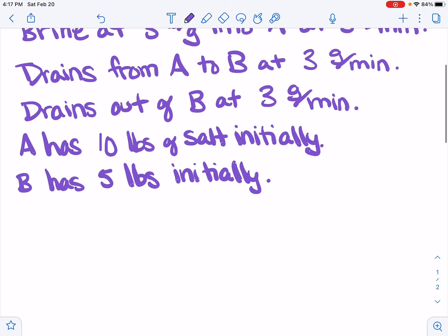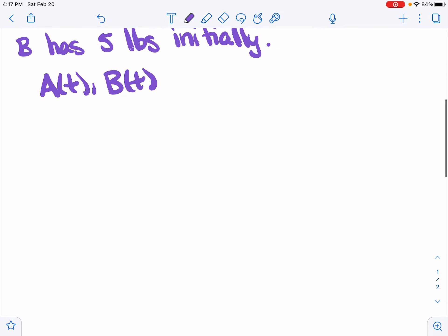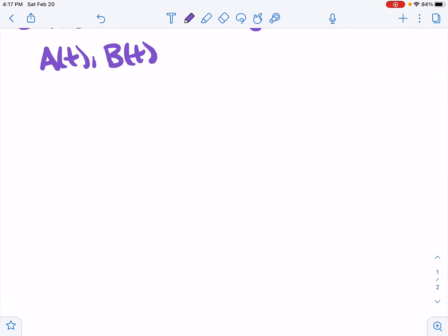We have two dependent variables now. We have A of t, and we have B of t. There are two quantities that we want to track in terms of time. So two dependent variables makes the problem a little more interesting, but the ideas are the same.